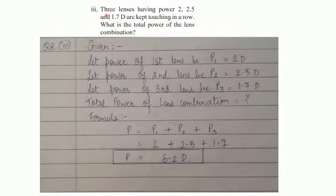The third numerical: three lenses having power 2, 2.5 and 1.7 diopters are kept touching in a row. What is the total power of the lens combination?